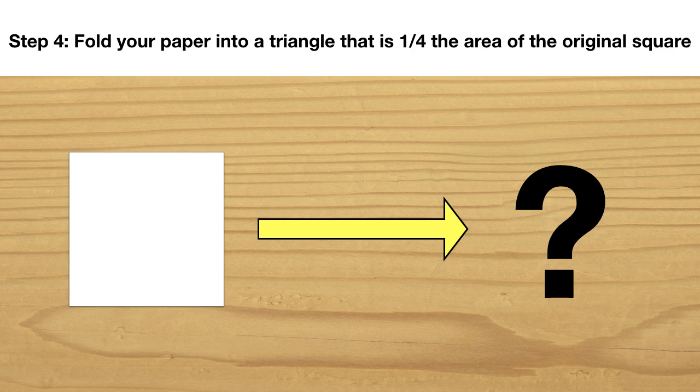Step 4: It's time for challenge 2. Take your second piece of paper and fold it into a triangle that is exactly one-fourth the area of the original square. Once you've solved this challenge, click next.